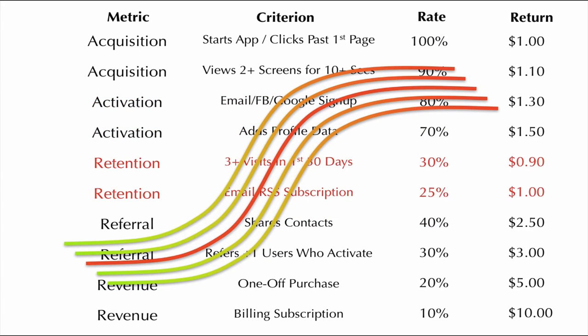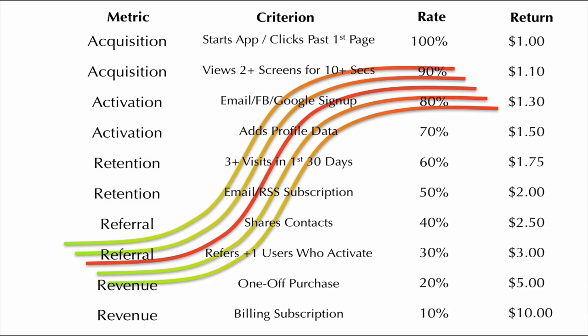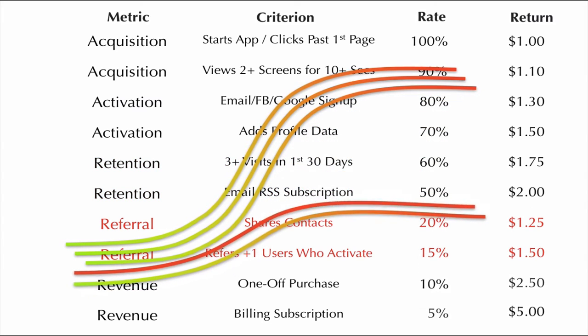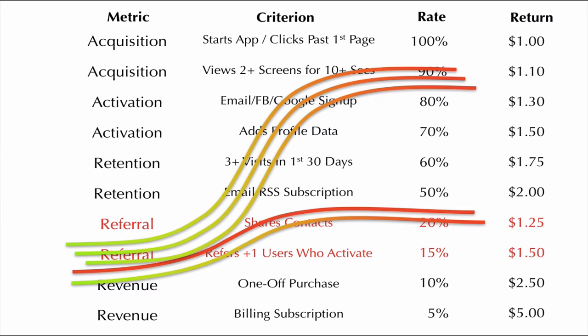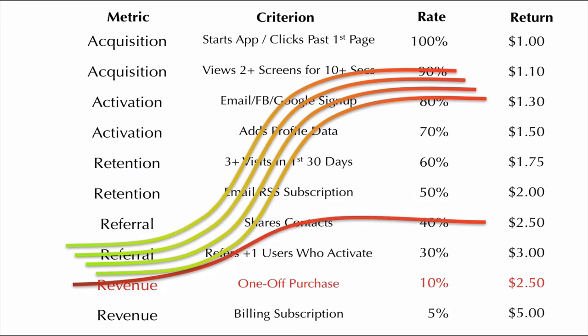Likewise, if the bottleneck is in retention, work done on acquisition or activation features won't stop the bleeding, and work on referral and revenue features can't achieve any significant effect. Referrals dominate the rate at which an ecosystem can grow, and thereby its revenue. And shortcomings in initial revenue generating experiences may bottleneck the subsequent ones.